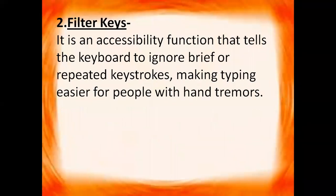Now we have filter keys. It is an accessibility function that tells the keyboard to ignore brief or repeated keystrokes, making typing easier for people with hand tremors. This key allows you to press any letter or number a number of times, but it will appear only once on the screen. For example, if you press A five times, it will appear only one time on the screen.